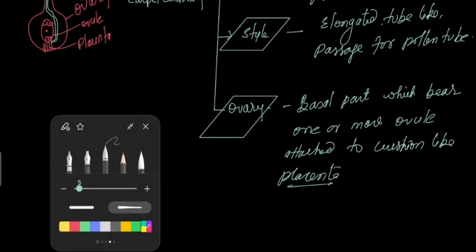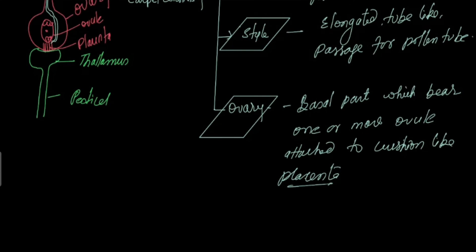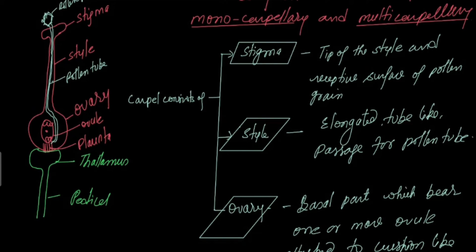The part at the bottom is called the thalamus, and the stalk is called the pedicel. I hope there is no problem understanding this. So the carpel I have drawn — you can call it a picture of a pistil — can be monocarpular, bicarpular, or multicarpular.